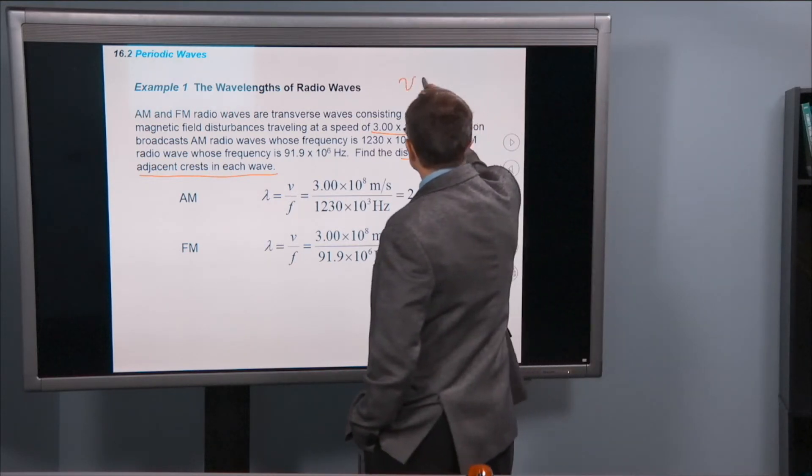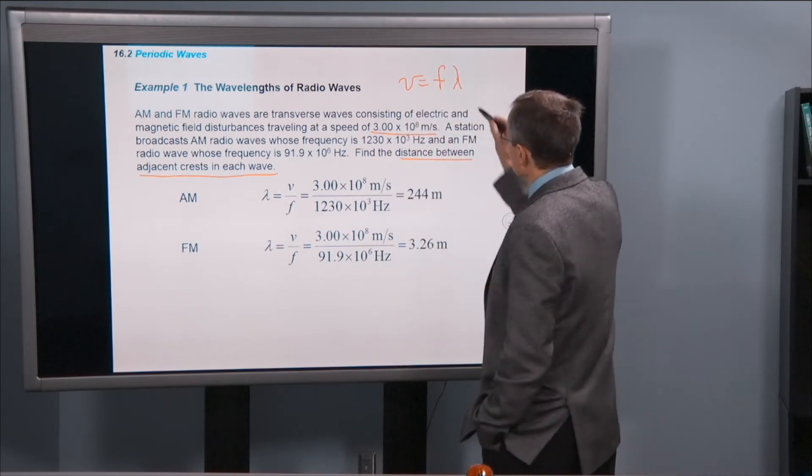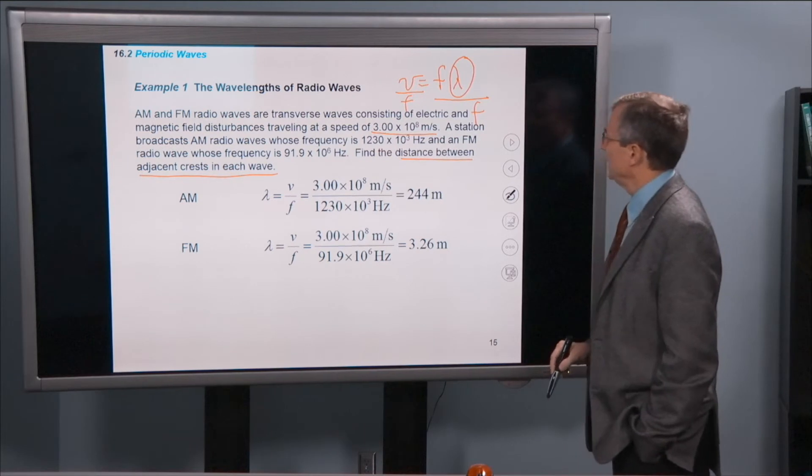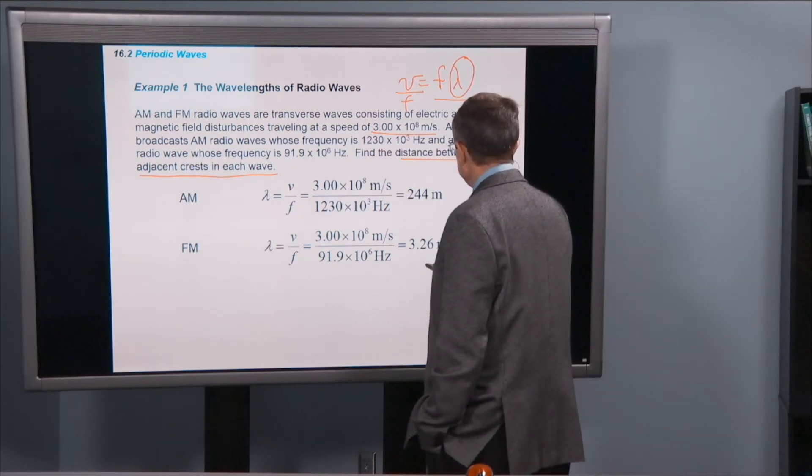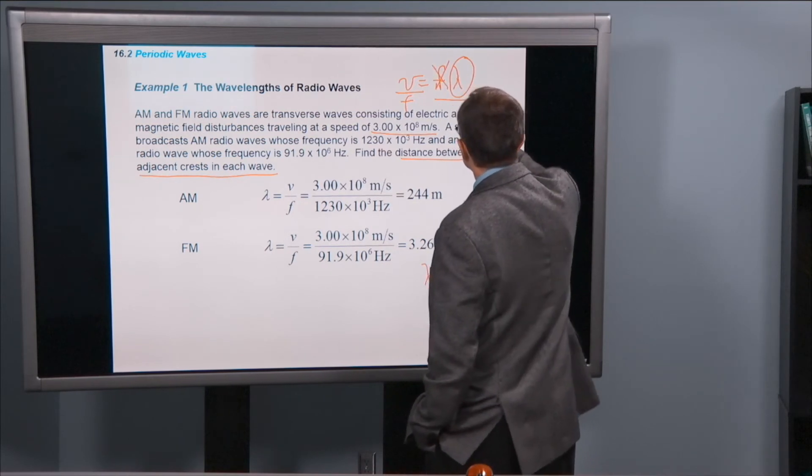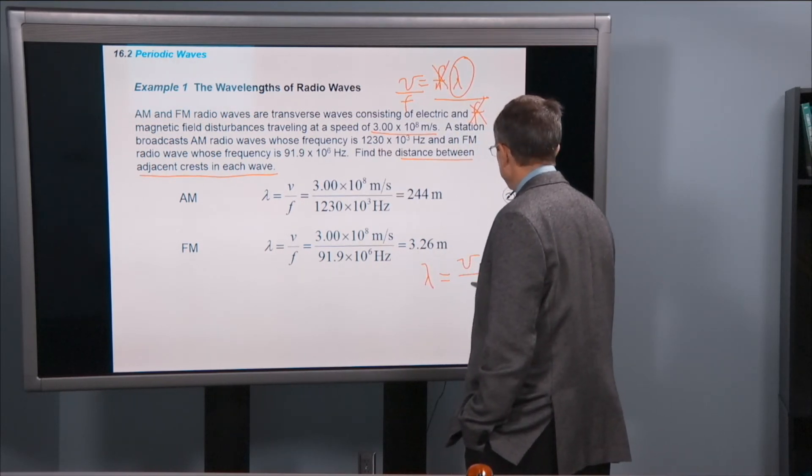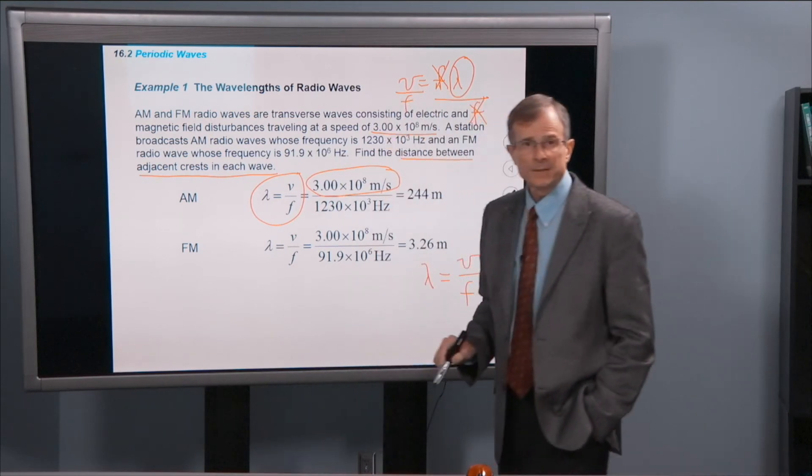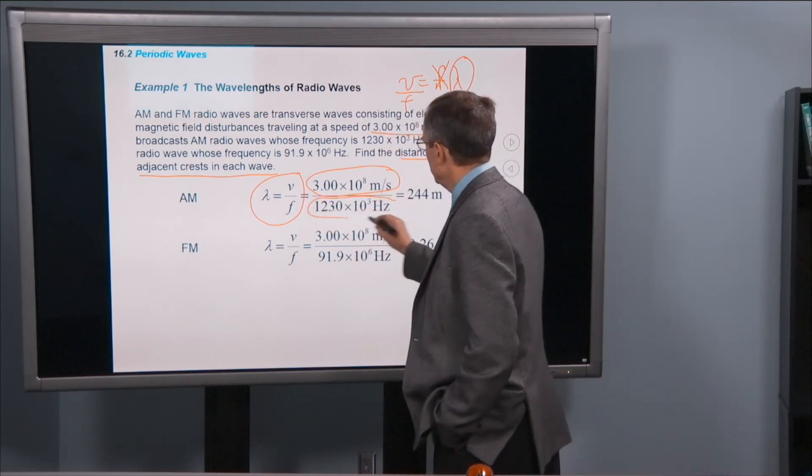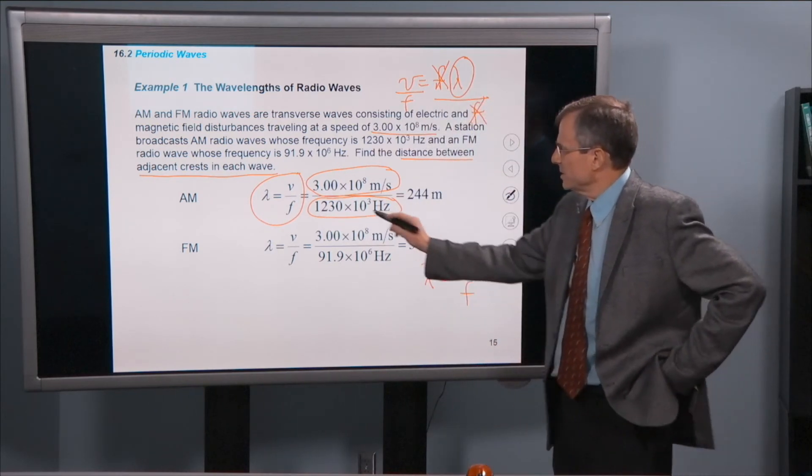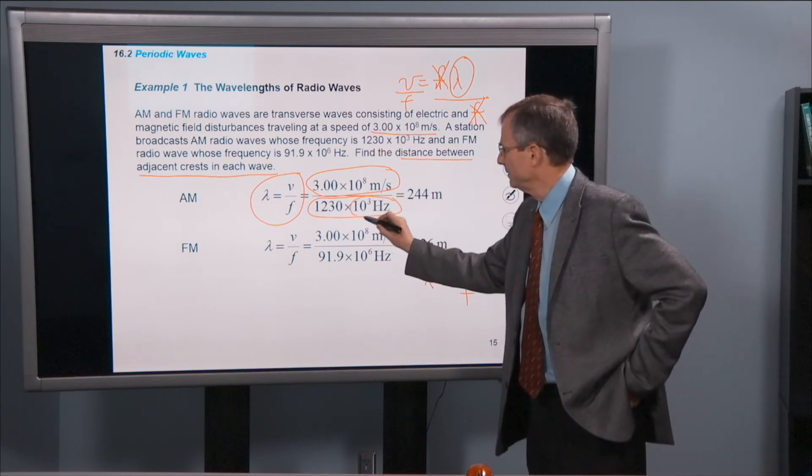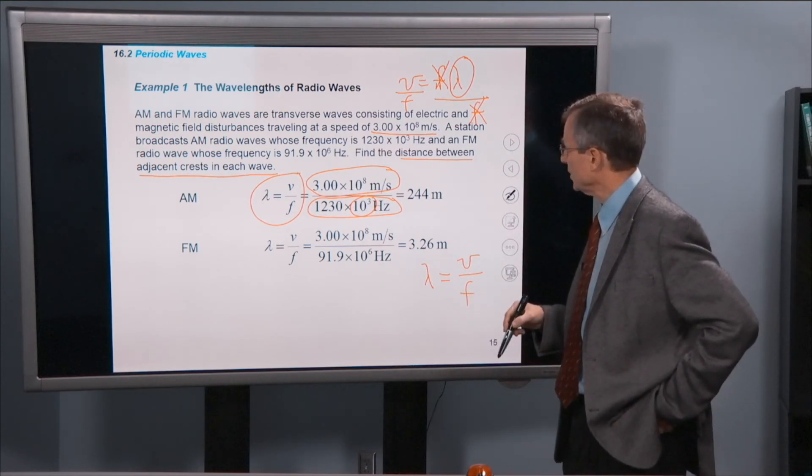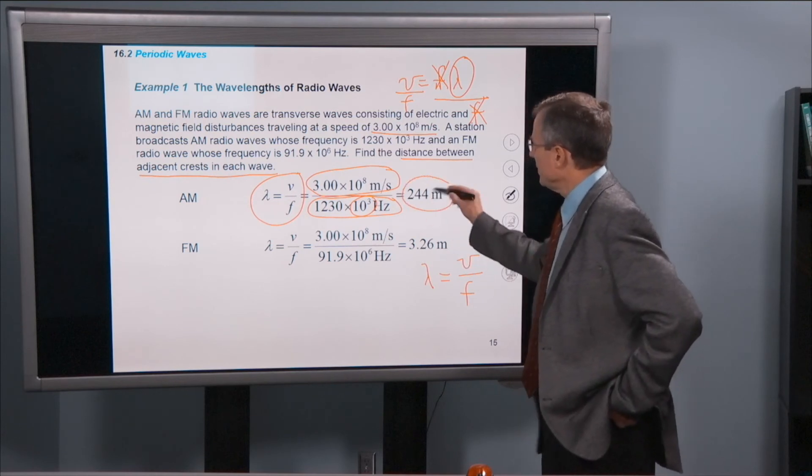So we know that v equals f lambda. If we're interested in the wavelength, then to find it we're going to divide both sides of the equation by f. And we get that the wavelength, therefore, the f's cancel on this side. And the wavelength is v over f. So that's this equation right here. V is the speed of light, 3 times 10 to the 8th meters per second. And then the frequency for that 1230 AM is 1230 kilohertz. Kilo is 10 to the 3. So the AM band is in the kilohertz range. 1230 times 10 to the 3. And so that wavelength is 244 meters.